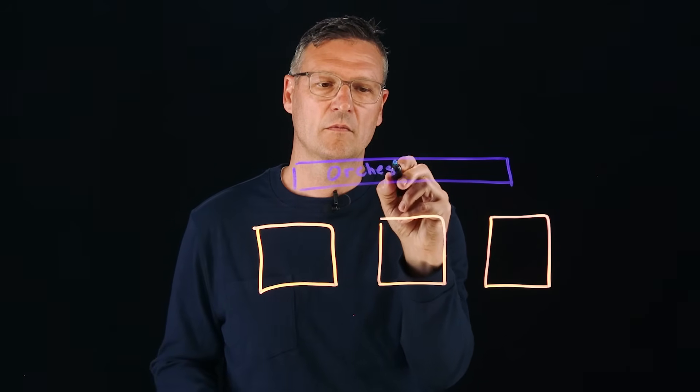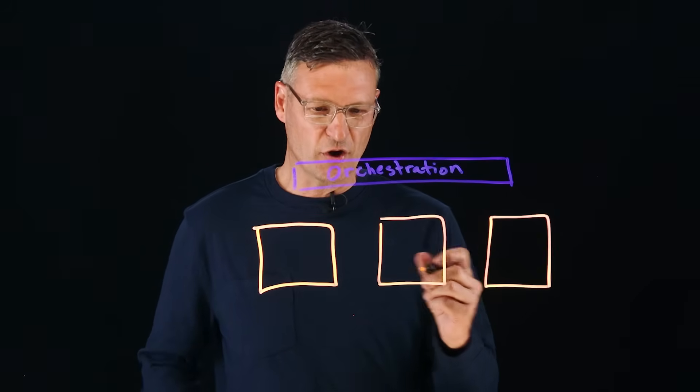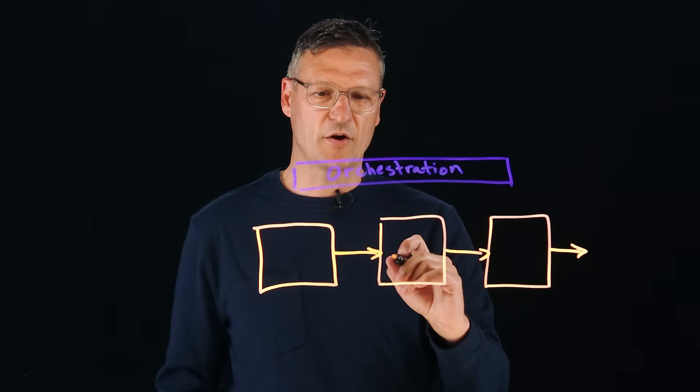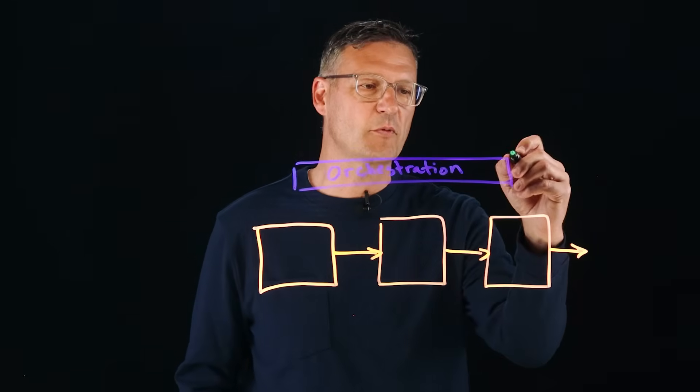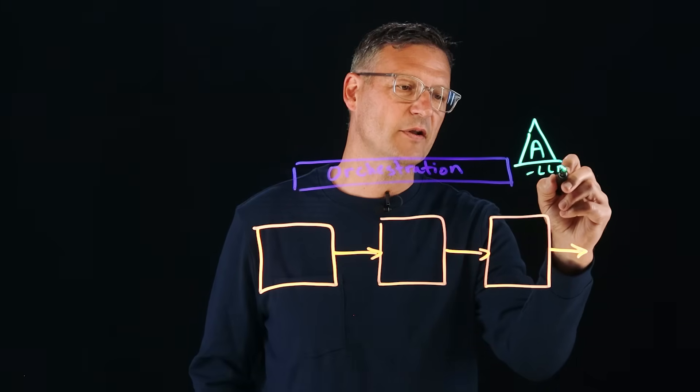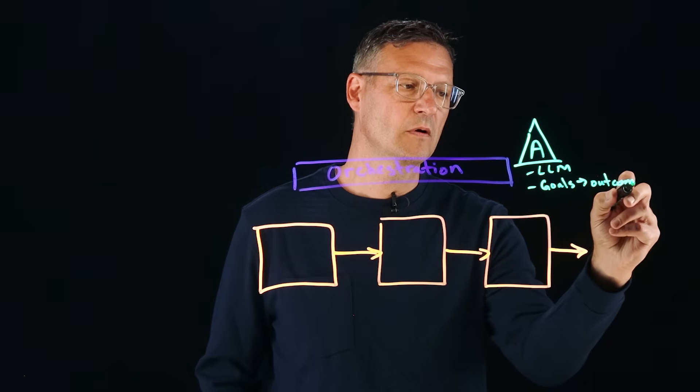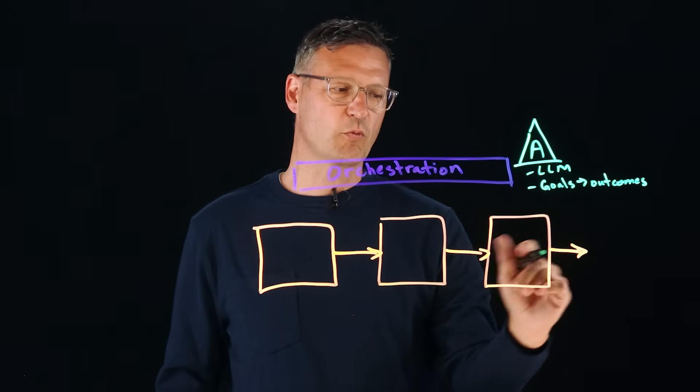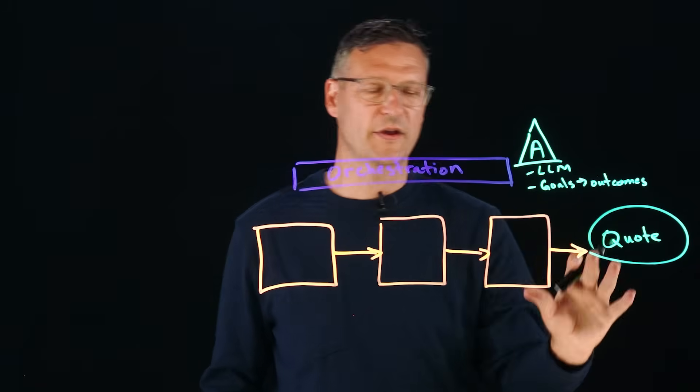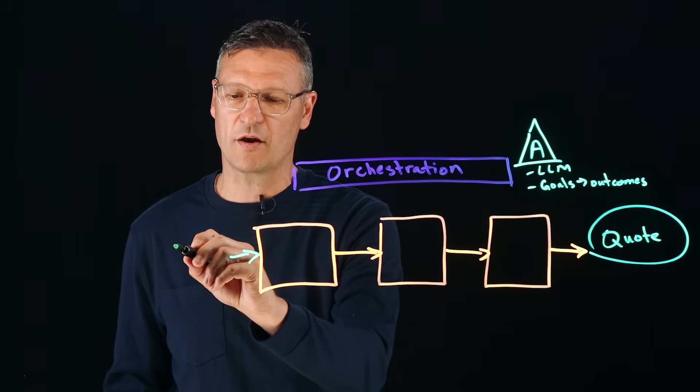Let's imagine that we have a business process here with three steps, and obviously the three steps here are going to be supported by technology. And let's talk about what it would look like to bring an orchestration layer into this process. When we're talking about orchestration, we have a flow like this, and when we talk about orchestration in agents, we just said a moment ago that we're bringing LLMs into place. I'm going to create a little triangle agent here. This is an agent. We said that agents have LLM capabilities, and we stressed that we're talking about goals and outcomes.